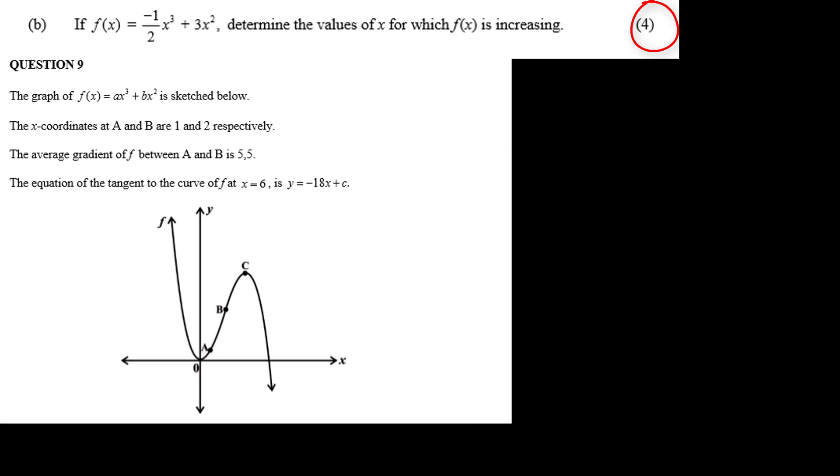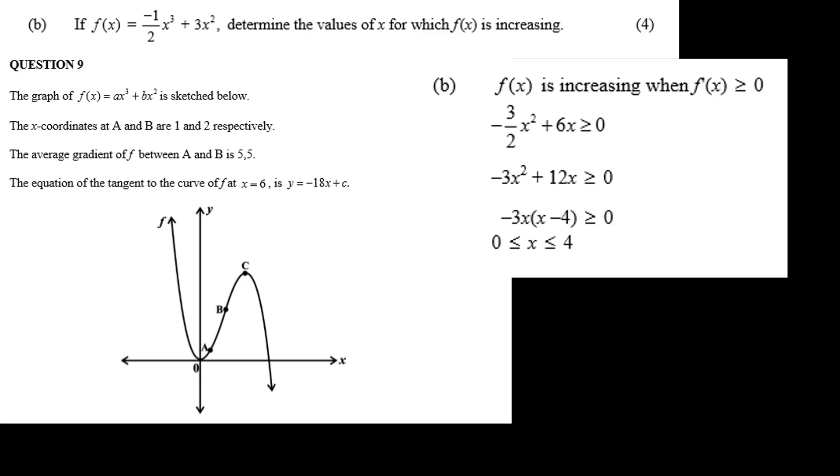Question 9b. This is for 4 marks. For the function f of x equals minus a half x cubed plus 3x squared, determine the values of x for which f(x) is increasing. Well that's easy enough.